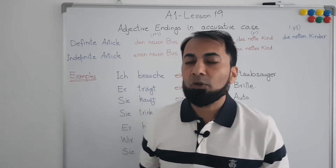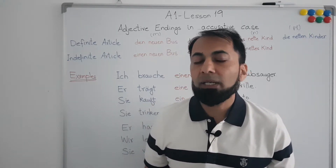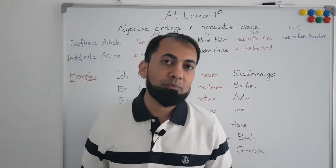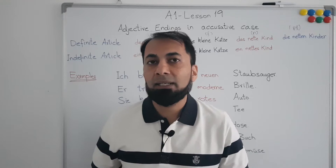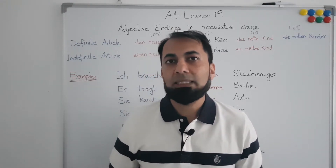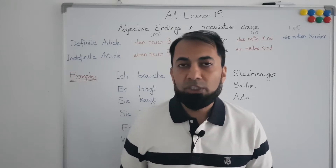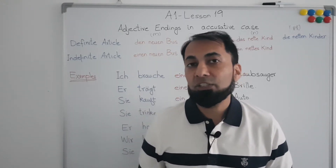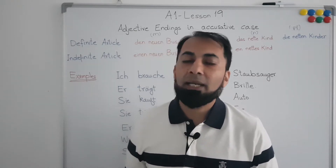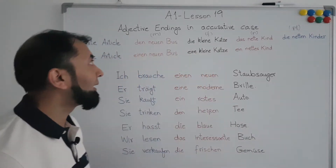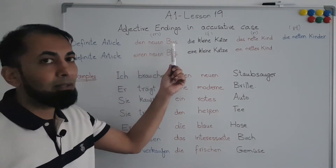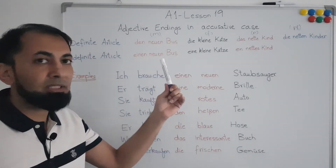We will see how the adjective ending changes depending on different genders of the noun — masculine, feminine, neuter, and plural. Also, there are two different types of articles in German: the definite article and the indefinite article. We will see in both cases what the adjective ending will be. Let's start with the definite article first. I have taken the example of 'Bus' — in German, 'Bus' is a masculine noun.